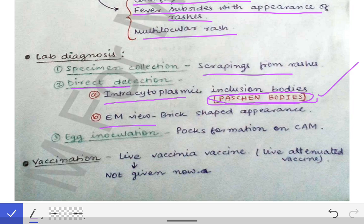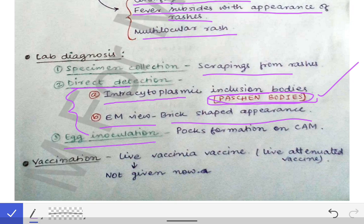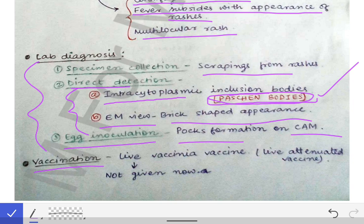Under electron microscopy, we see the brick-shaped rapid appearance of the virus — this is an important characteristic for diagnosis of smallpox. Additionally, when the virus is inoculated on an egg, there is formation of pox on the chorioallantoic membrane, which is another way to diagnose smallpox infection.